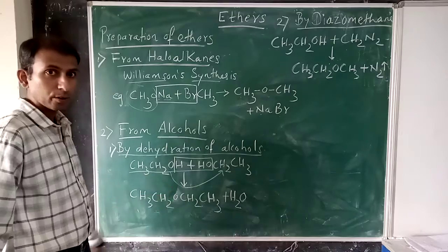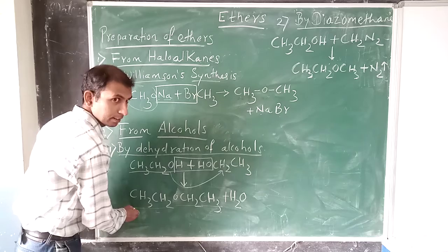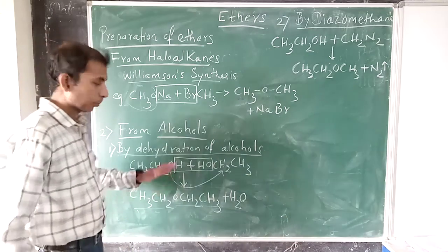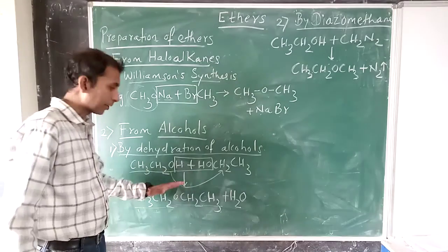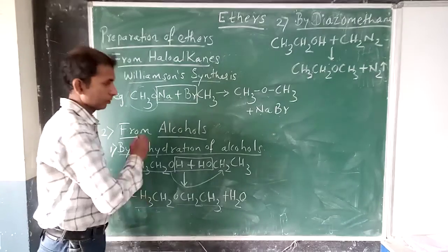We get an ether. What is the name of this ether? Give the IUPAC name for this ether. The name will be ethoxyethane. Last time we saw the IUPAC nomenclature, so please give the IUPAC name for the main product. It is ethoxyethane.